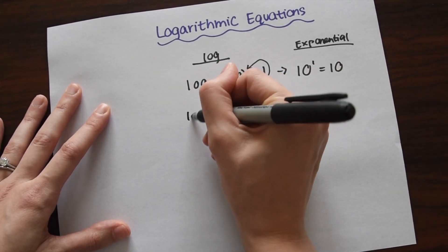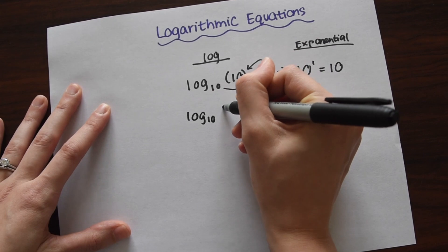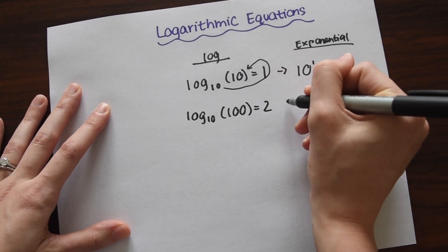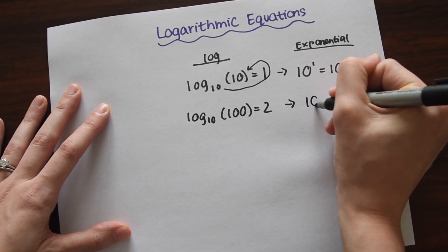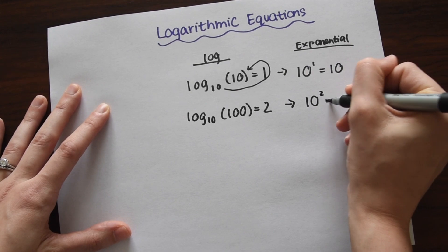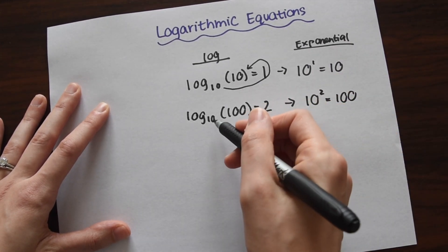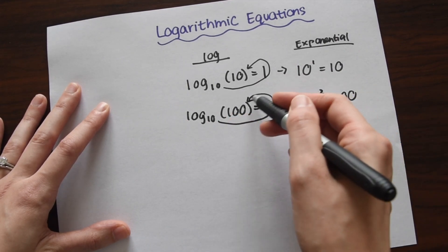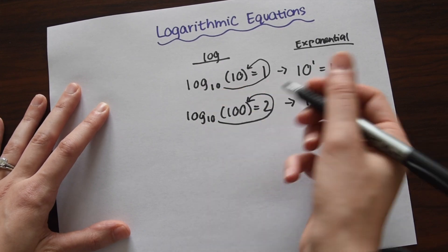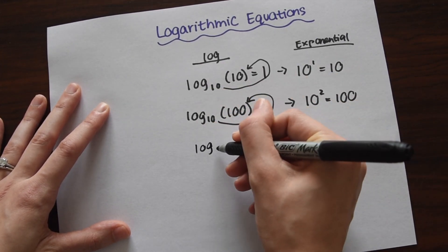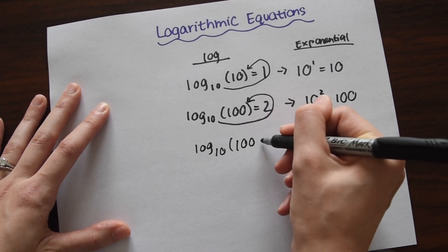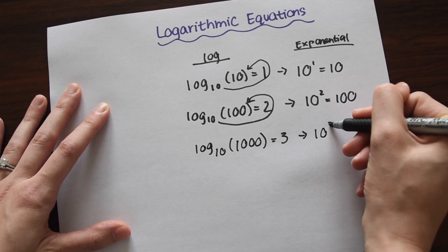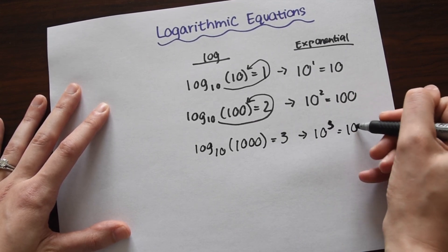So let's look at another one: log base 10 of 100 equals 2. In exponential form, this would be written as 10 squared equals 100. Notice this also just follows that swooping pattern — 10 to the second is 100. And then this pattern can just keep going. So if we look at one more: log base 10 of 1000 equals 3, which is really equal to 10 to the third, which is 1000.